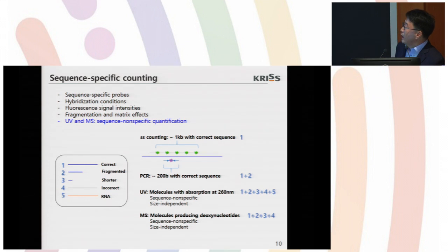For sequence-specific counting, we have to consider many new parameters such as sequence-specific probes, hybridization conditions, fluorescent signal intensity, fragmentation, matrix effect, and so on. And finally, we wanted to validate our results with UV and mass spectrometry. But UV and mass spectrometry are sequence-nonspecific methods for DNA quantification.